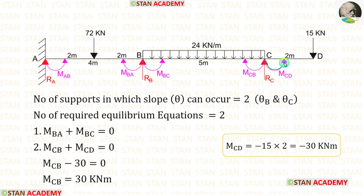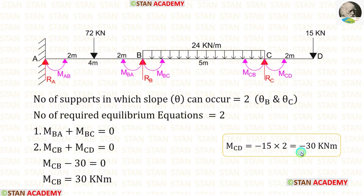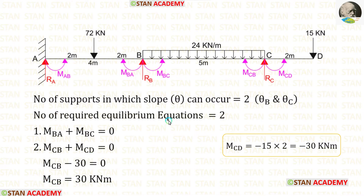Since MCD is acting in the anti-clockwise direction, we apply a negative sign, giving a negative moment of minus 30 kN·m. Substituting into the equilibrium equation at joint C, MCB equals 30 kN·m. So, the first equilibrium equation is MBA plus MBC equals 0, and the second is MCB equals 30 kN·m.